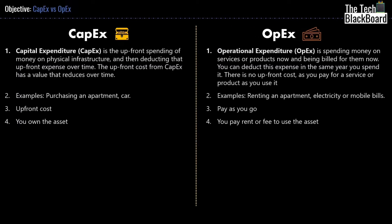Let's quickly compare Capital Expenditure and Operational Expenditure. Starting with the official definition from Microsoft: CapEx is the upfront spending of money on physical infrastructure, and then deducting that upfront expense over time — the upfront cost from CapEx has a value that reduces over time. In other words, you spend upfront money to set up infrastructure, and this initial investment is adjusted in the books of accounts over the period of time the infrastructure serves you.